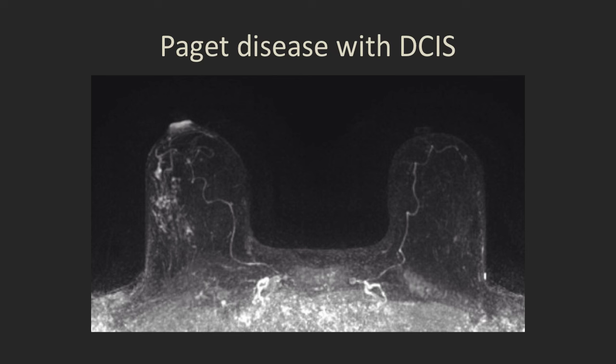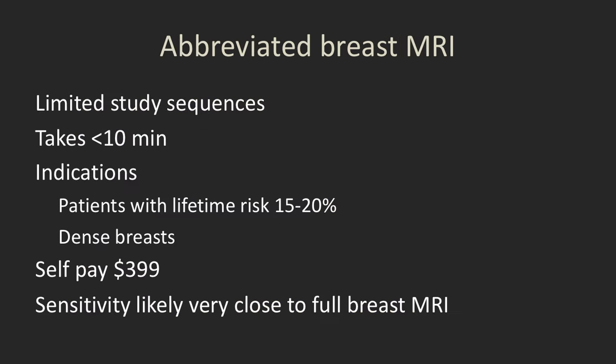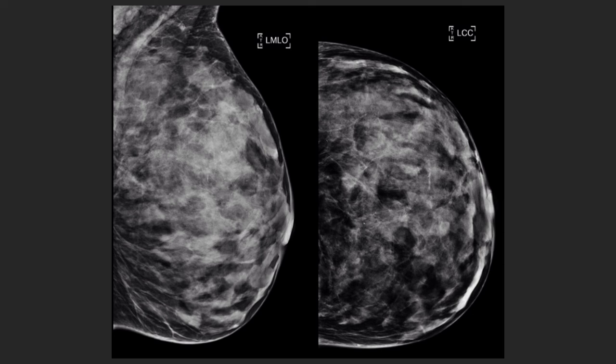Here's a maximum intensity projection of a patient who has Paget disease in the right breast — you can see asymmetric uptake in her right nipple compared to her left, and non-mass enhancement within the right breast which was her fairly extensive DCIS. Abbreviated breast MRI uses limited study sequences, takes less than 10 minutes, and is indicated for patients with intermediate risk of breast cancer or dense breasts with no other risks. At our institution this is self-pay at $399, and sensitivity in most comparative studies is very close to that of a full breast MRI.